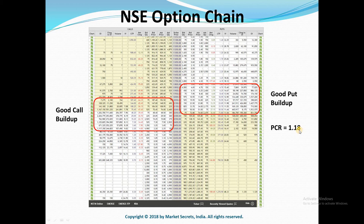In this particular case the PCR comes to 1.18, which indicates there are a lot of puts compared to calls. This means options sellers have sold more put contracts compared to call contracts, indicating that big players are betting on the price to move up — because if there are a lot of puts, the price will not go down. Since PCR is at 1.18, it indicates Nifty is currently a bit bullish.